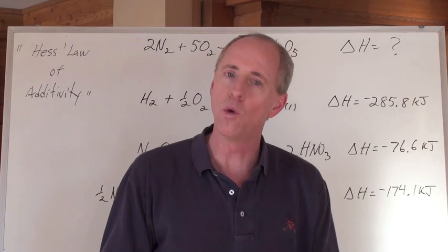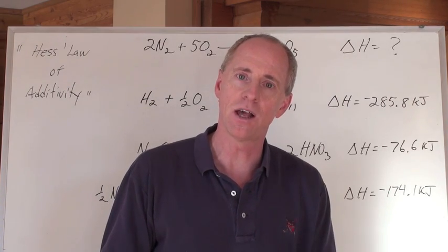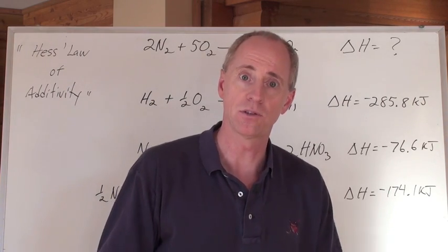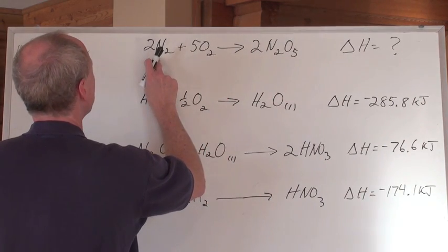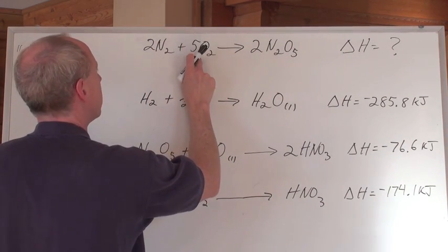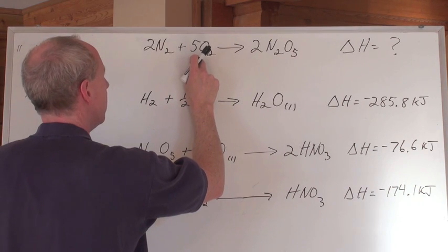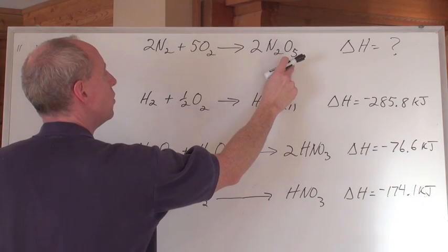Remember the rules. Don't worry about the elements. They take care of themselves. Just worry about the compounds. I start with my net equation. Well, that's an element. I'm not going to worry about that. So I'll go on to the next one. Well, that's an element. I am going to worry about that. The first thing I'm going to worry about is the N2O5.